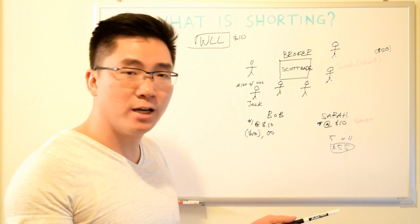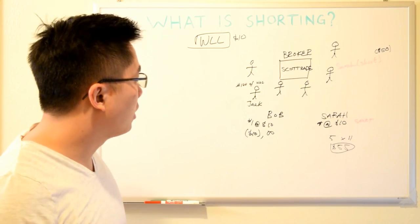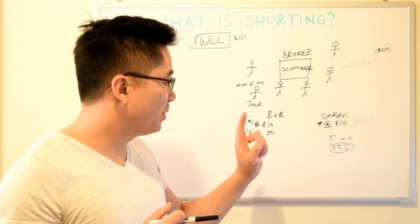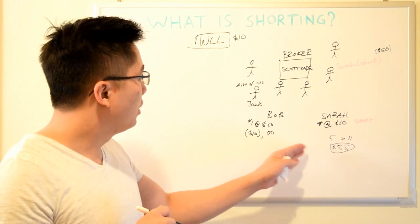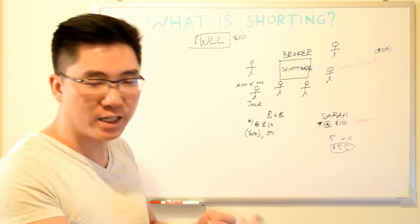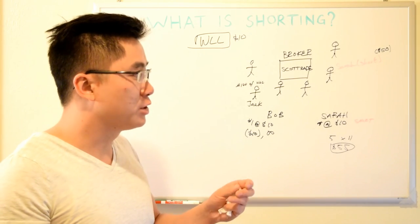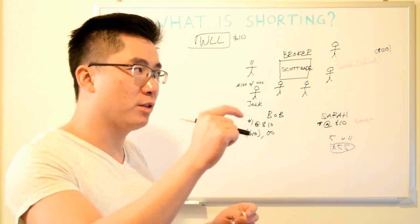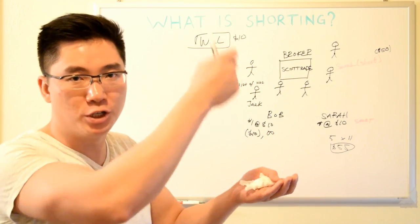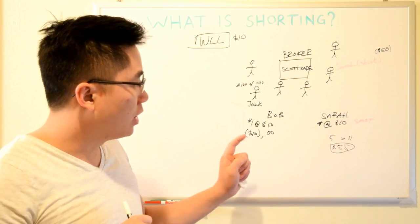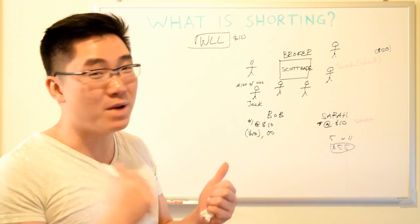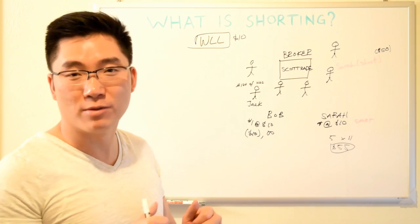That's it, guys - thanks for watching. I hope you understand what shorting is now. Remember, shorting is not day trading - that's buying and selling within the same day. Shorting is when you anticipate the stock price will go down. Buying is when you anticipate something will go up, it appreciates, and you sell and gain the gap. If you have any questions, drop them below. If you liked this video, smash the like button and subscribe for more videos.